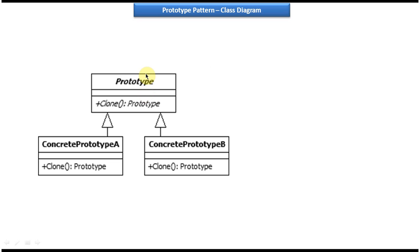Here you can see the Prototype interface. It has a clone method and it returns a Prototype. Prototype is an interface, so this clone method is an abstract method.